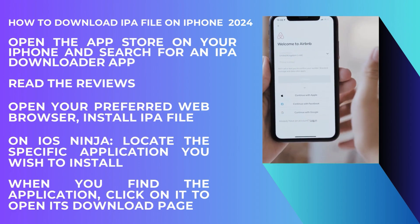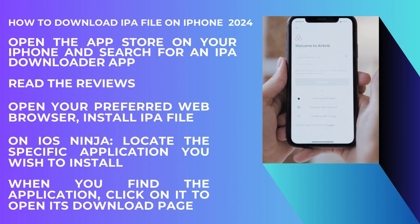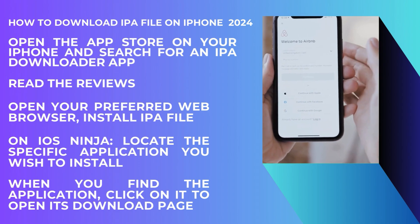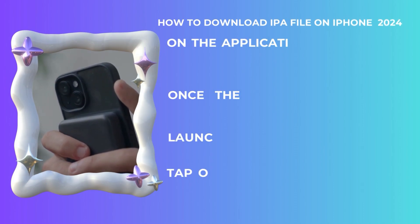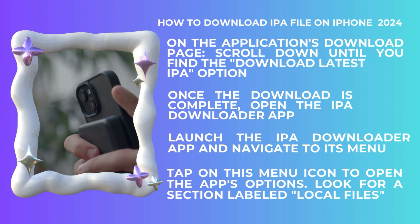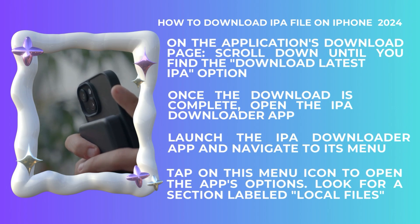When you find the application, click on it to open its download page. On the application's download page, you will see detailed information about the app including its version number, size, and a brief description. Scroll down and you'll find the 'Download Latest IPA' option — this button is usually prominently displayed and easy to find. Click on it to start the download process. The download might take a few minutes depending on the size of the IPA file and your internet connection speed.